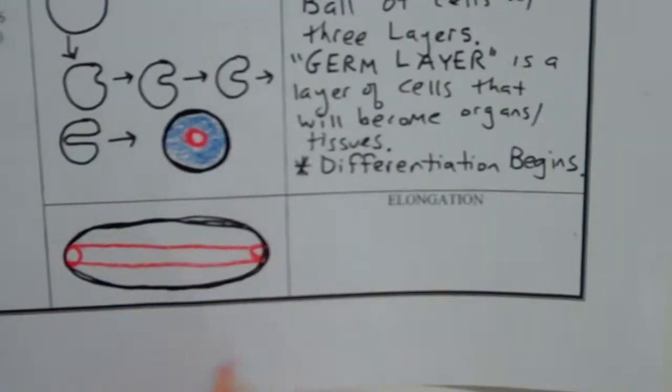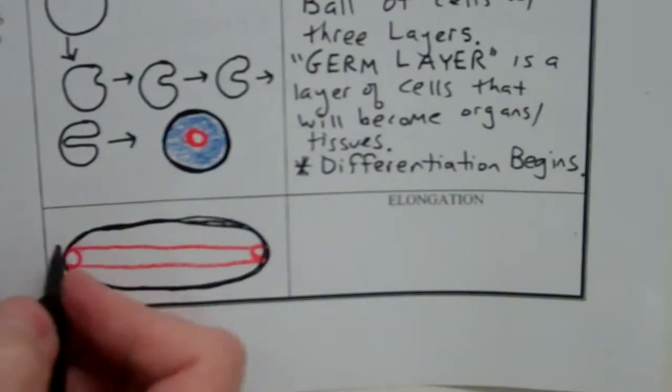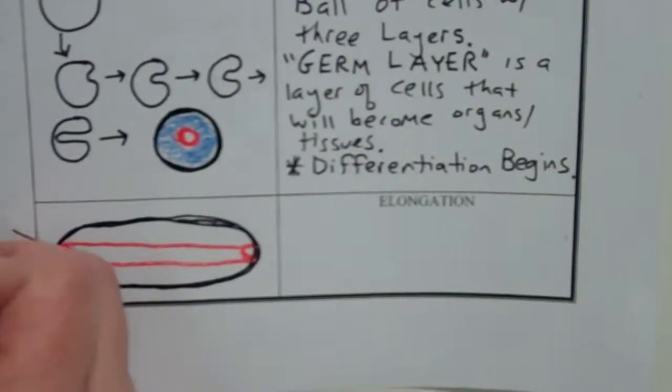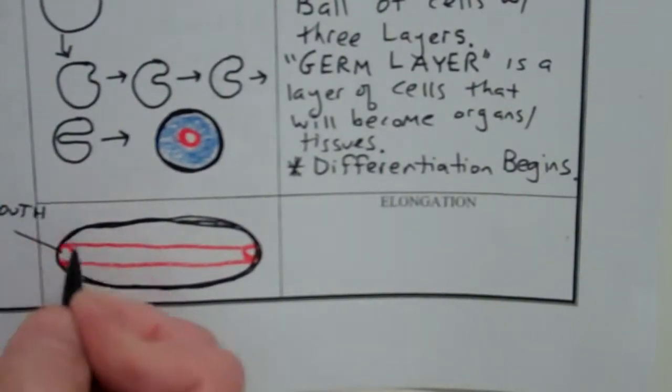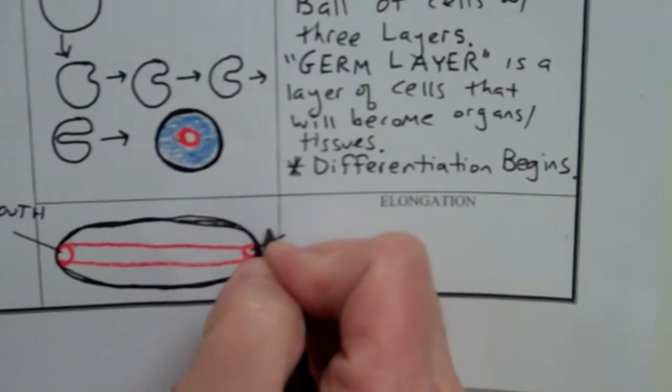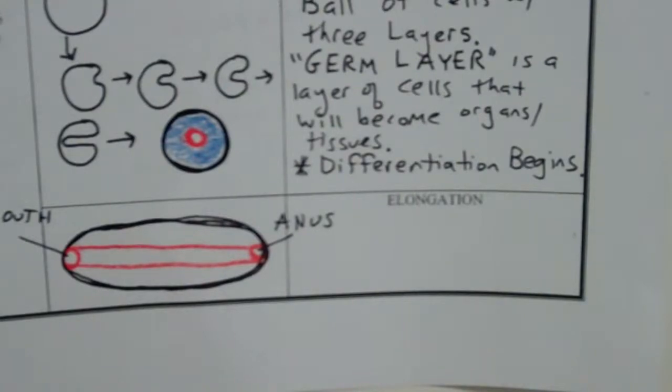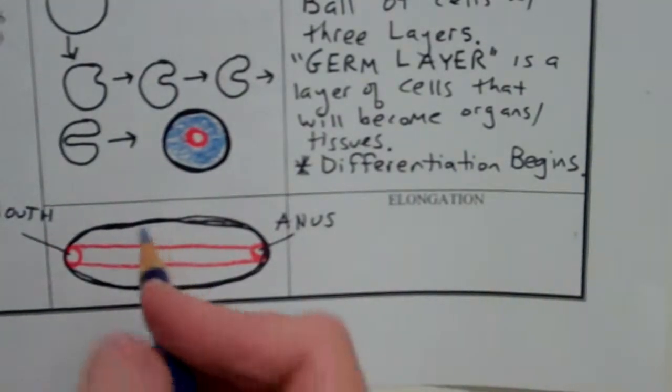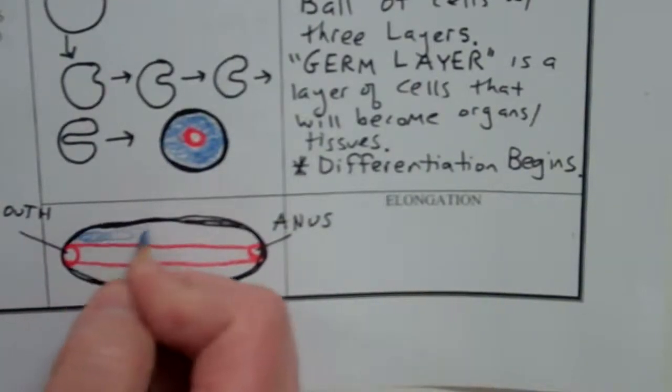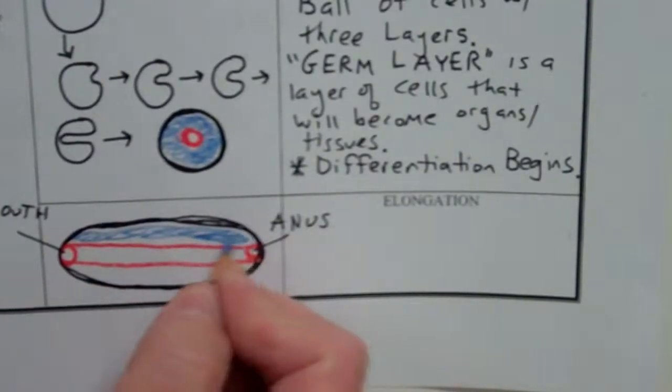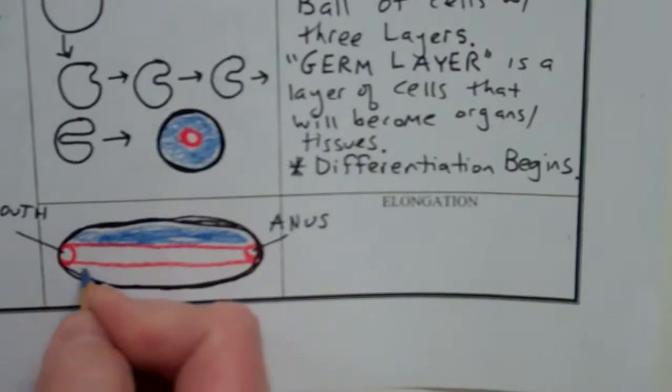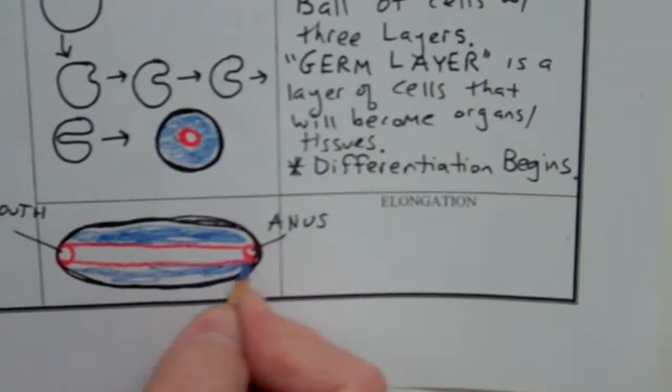And yep, you know it. We call that the anus. So one of these ends is going to become your mouth. And this is, yes, it's going to become the anus. So this is a tube that goes all the way through. And then this layer that I'm going to color blue is all a bunch of cells. We call that the middle layer of cells.